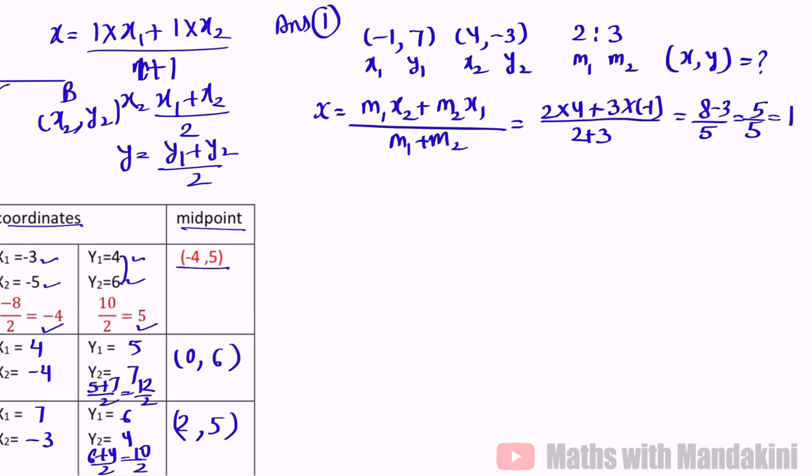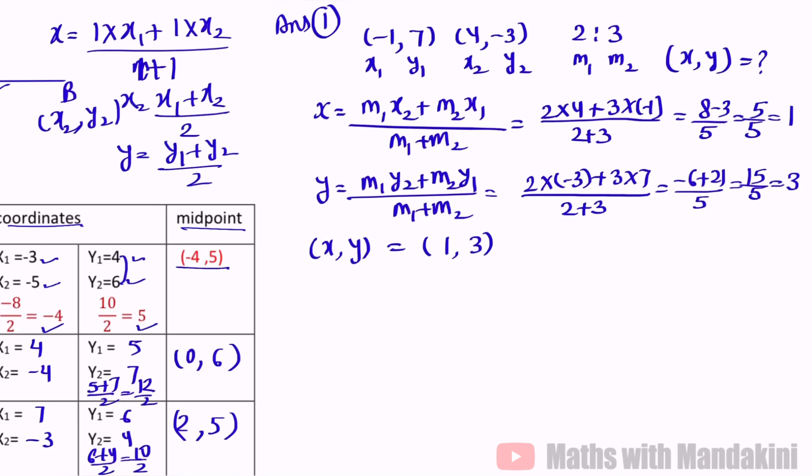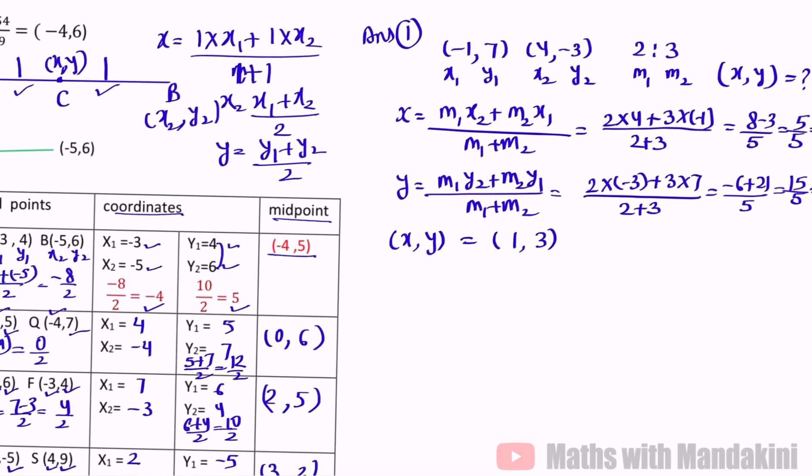X is equal to M1x2 plus M2x1 upon M1 plus M2. Put the values: 2 into 4 plus 3 into minus 1 divide by 2 plus 3. It is 8 minus 3 upon 5 that is 5 upon 5, equal to 1. X ki value mil gayi 1. Similarly for y, M1, y2, M2, y1 upon M1 plus M2. Values put: 2 into minus 3 plus 3 into 7 divide by 2 plus 3. It is minus 6 plus 21 upon 5 that is 15 upon 5 and it is equal to 3. So the point x, y means first x, (1,3). This is the answer.